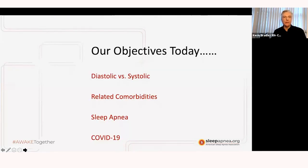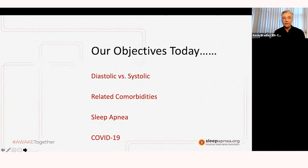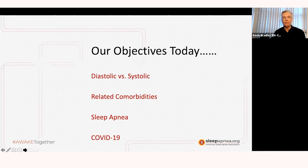Some of our objectives for today: we'll discuss what blood pressure really means. You've probably heard the term diastolic blood pressure versus systolic, and we'll go into detail about what those two numbers relate to. We'll also talk about related comorbidities, how they relate to sleep apnea, and how sleep apnea can cause high blood pressure. Given the current situation, we'll also discuss COVID-19 and what that means for our patient population.